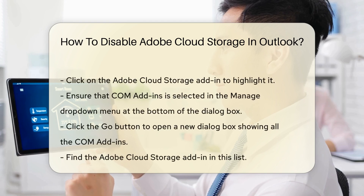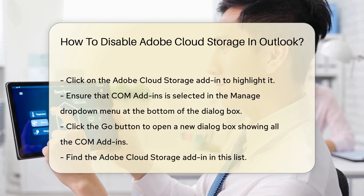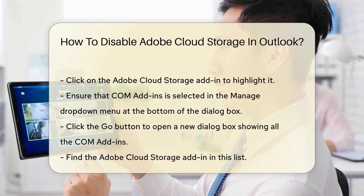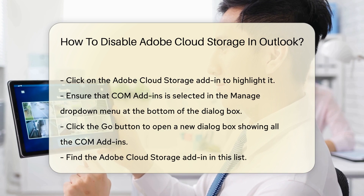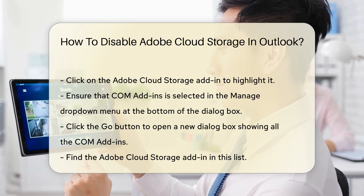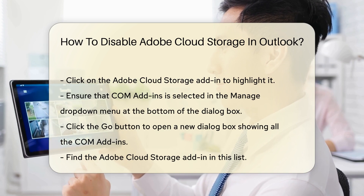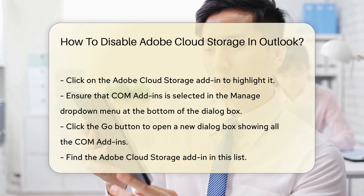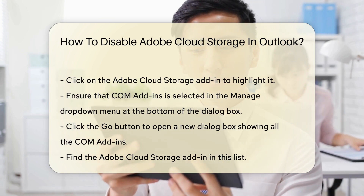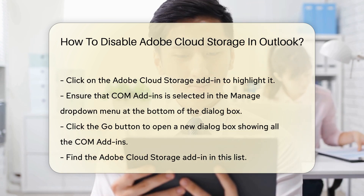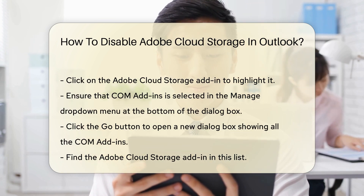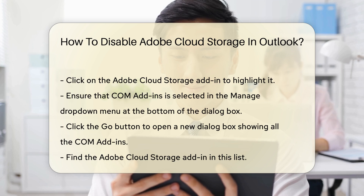In the Outlook Options dialog box, select the Add-ins tab. Here, you will see a list of all the add-ins currently installed in your Outlook application. Look for the Adobe Cloud Storage add-in in this list. Once you have located it, click on it to highlight it.